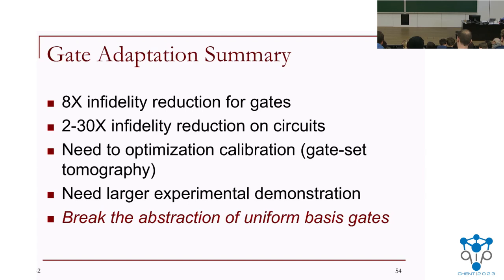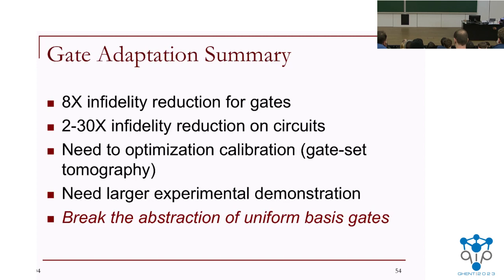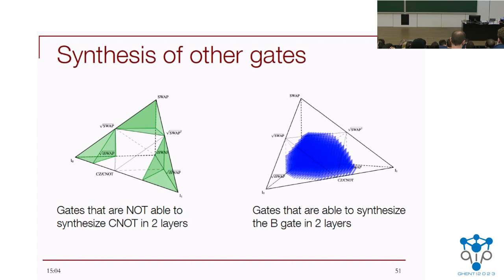Q: What's the white space in the middle of those triangular Weyl chamber diagrams? A: The white space contains all the two-qubit gates that can create a CNOT in two layers. If we find a trajectory that enters the white space, we can implement that gate plus some single-qubit gates to get a CNOT in just two two-qubit gate layers.